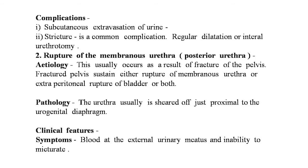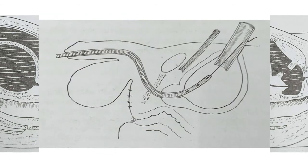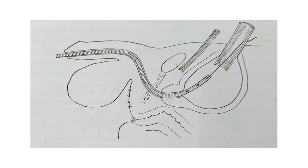Here is an image showing rupture of the membranous urethra with extravasation of urine within the pelvis, outside of the bladder. Note that the prostate is displaced upwards and posteriorly with rupture of the puboprostatic ligaments. A second image shows management of the membranous urethra rupture — a Foley catheter is within the bladder with a silk thread tied to the eye of the catheter, and suprapubic bladder drain and retropubic drain are visible.